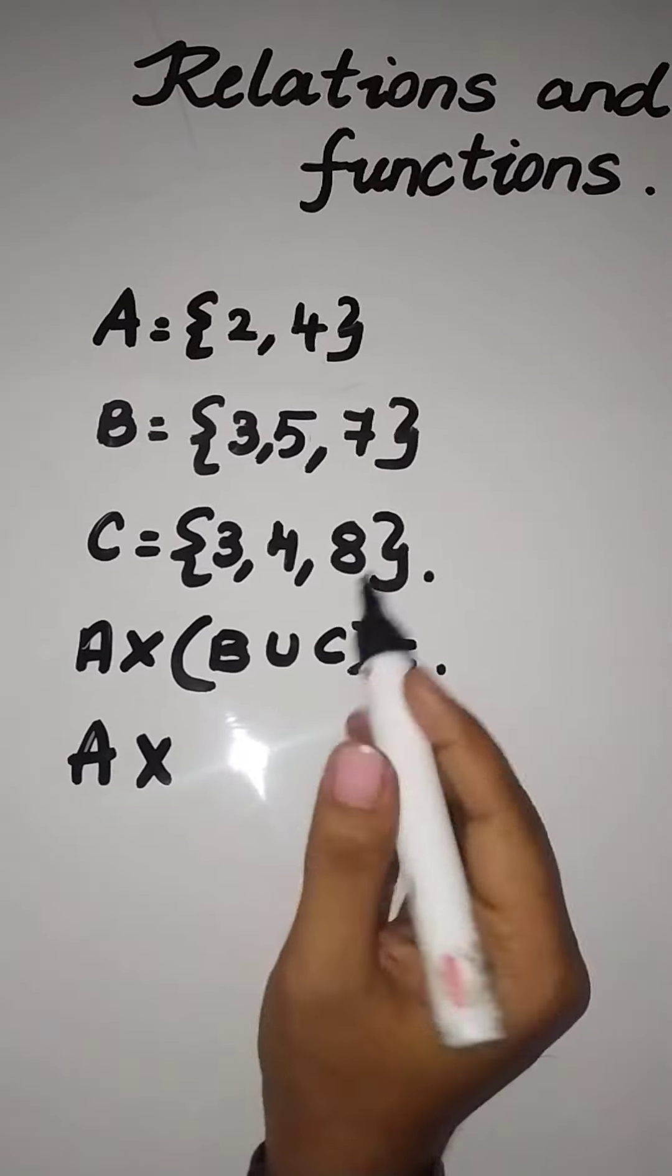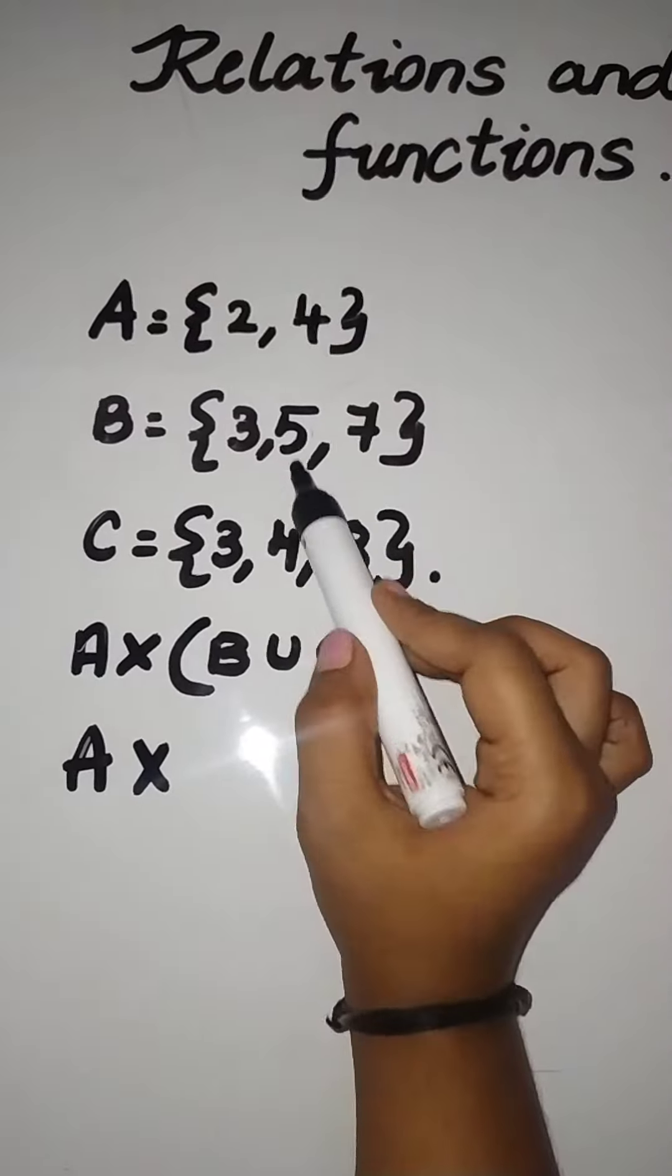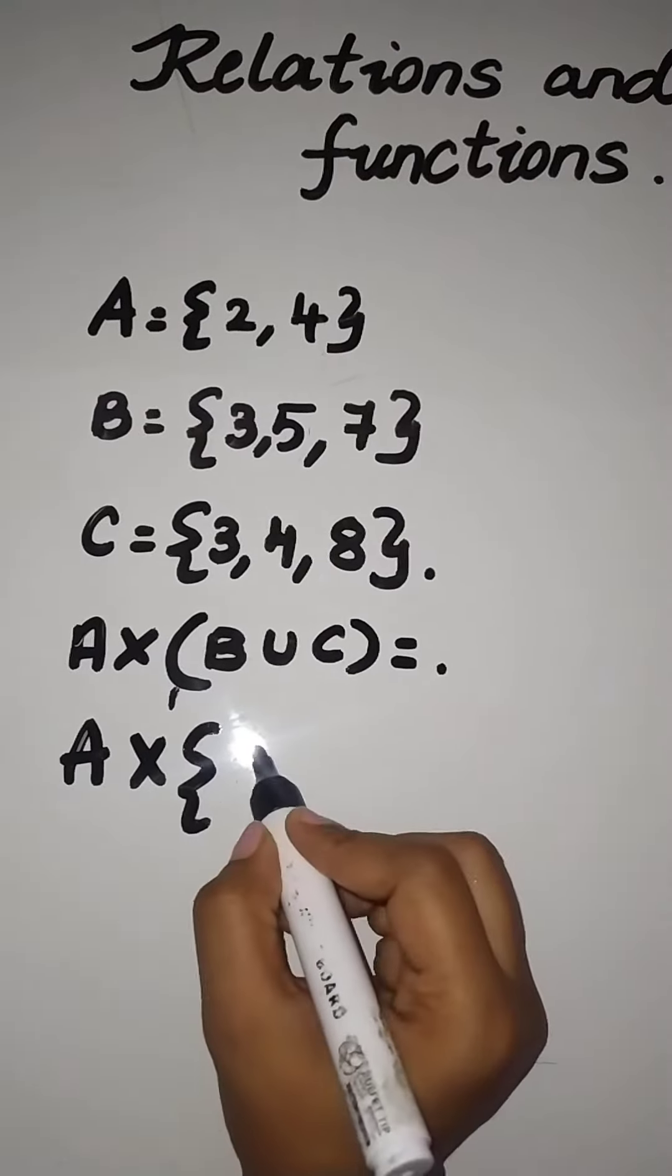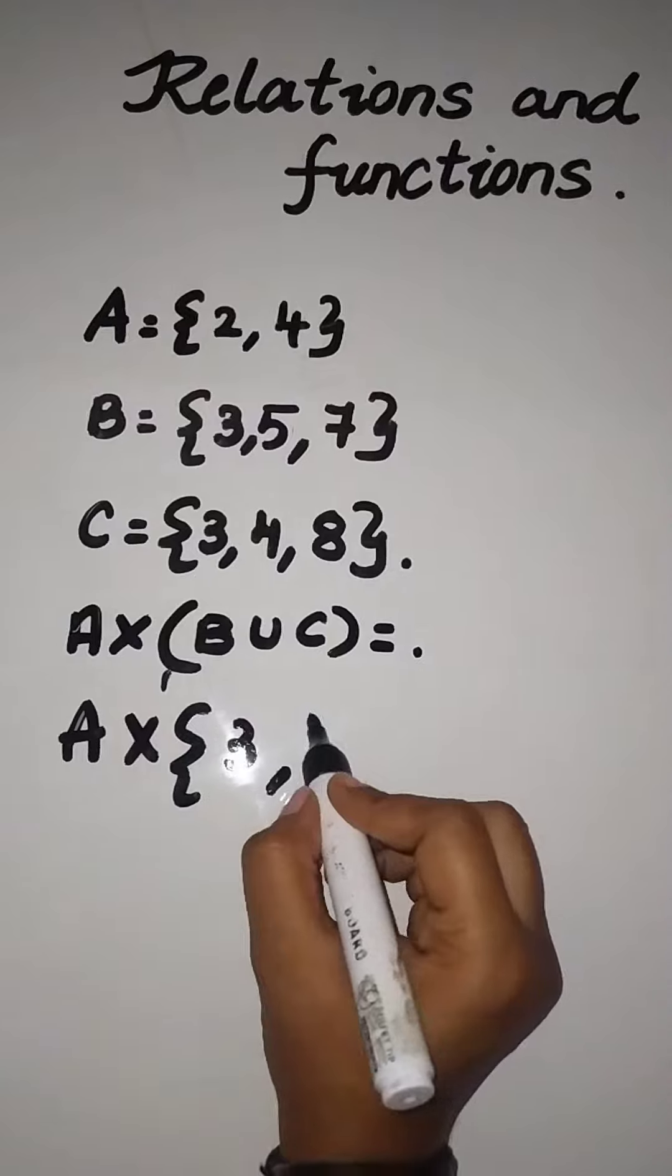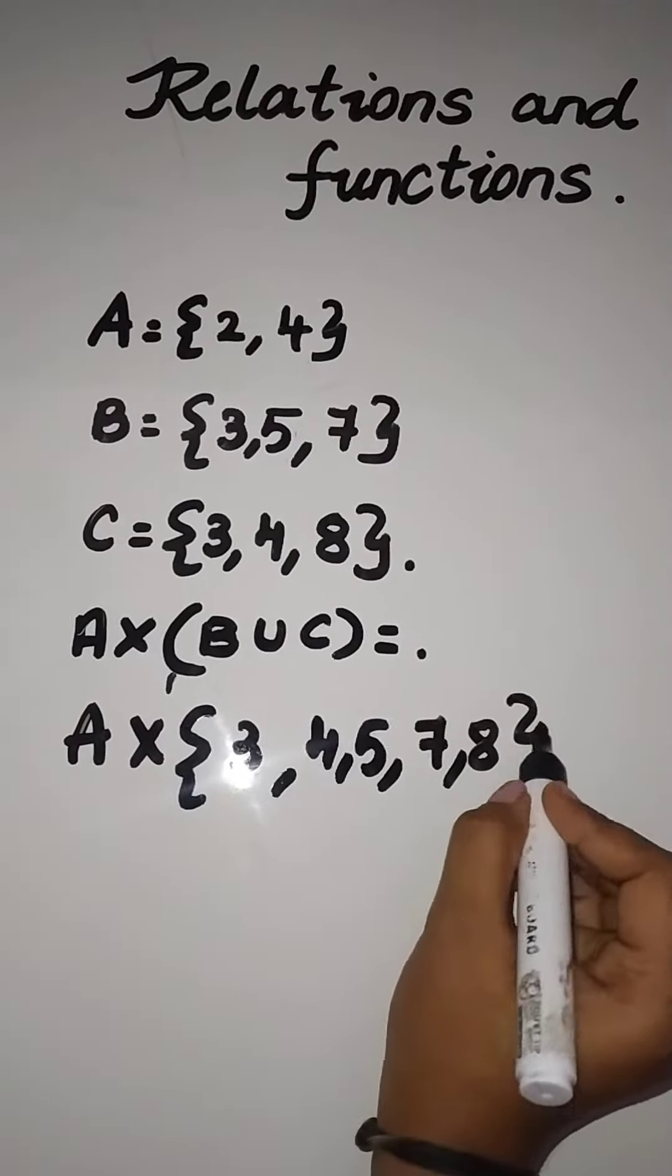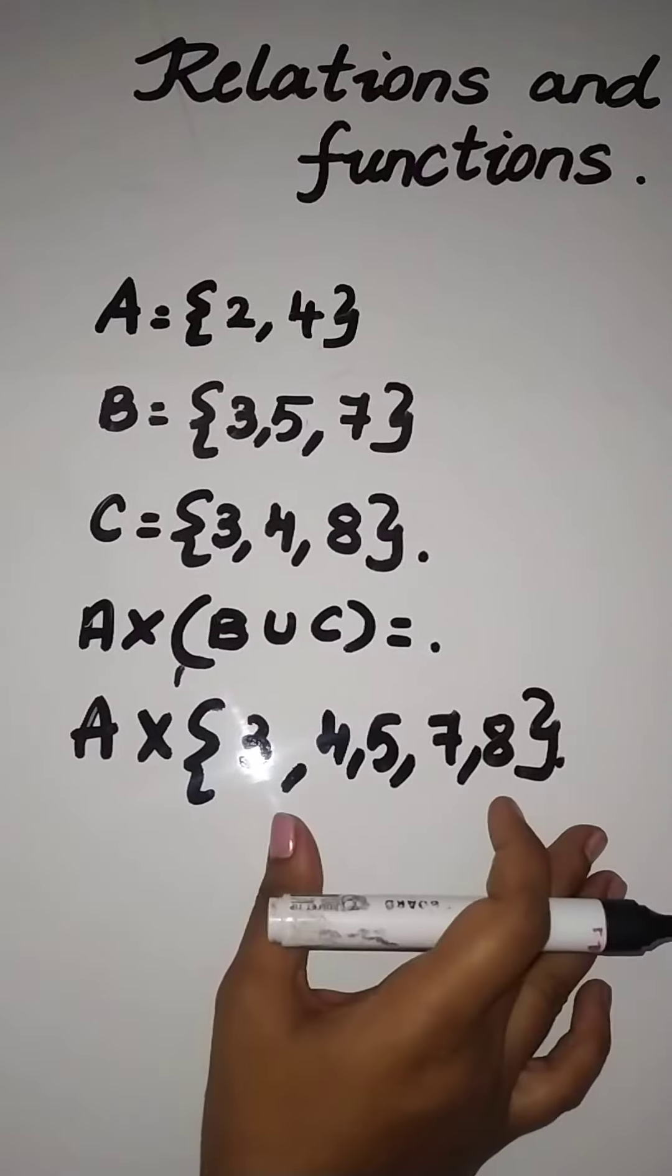So B union C - you have to combine both B elements and the C elements, and hence it will become 3, 4, 5, 7, 8. So these are the five elements present, and these five elements